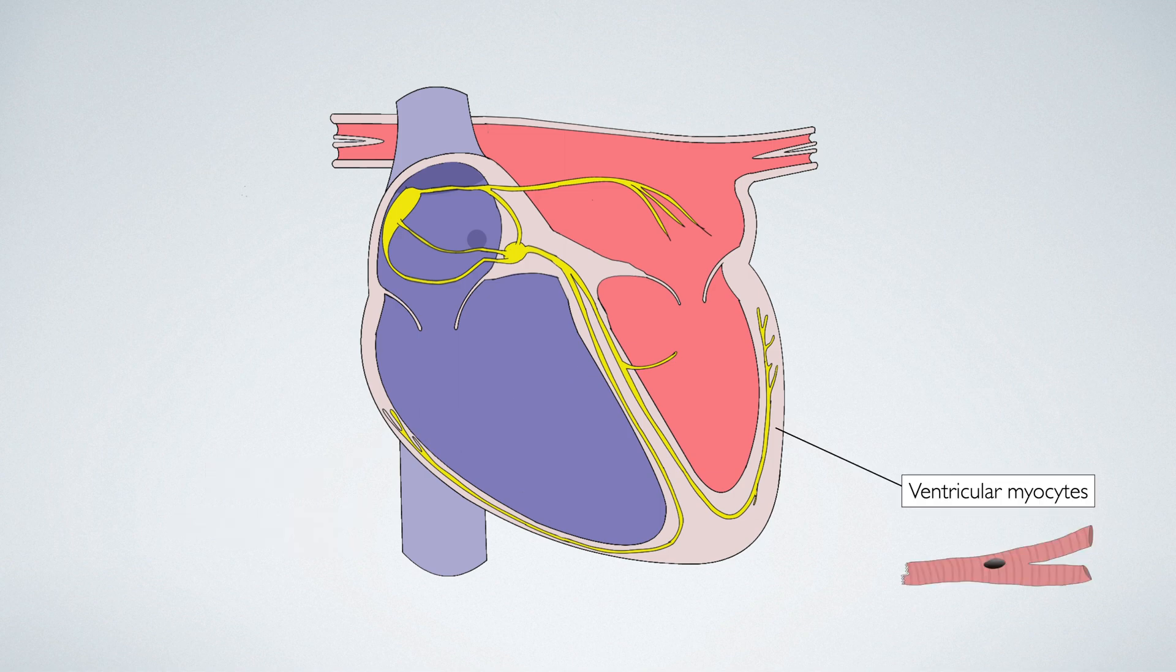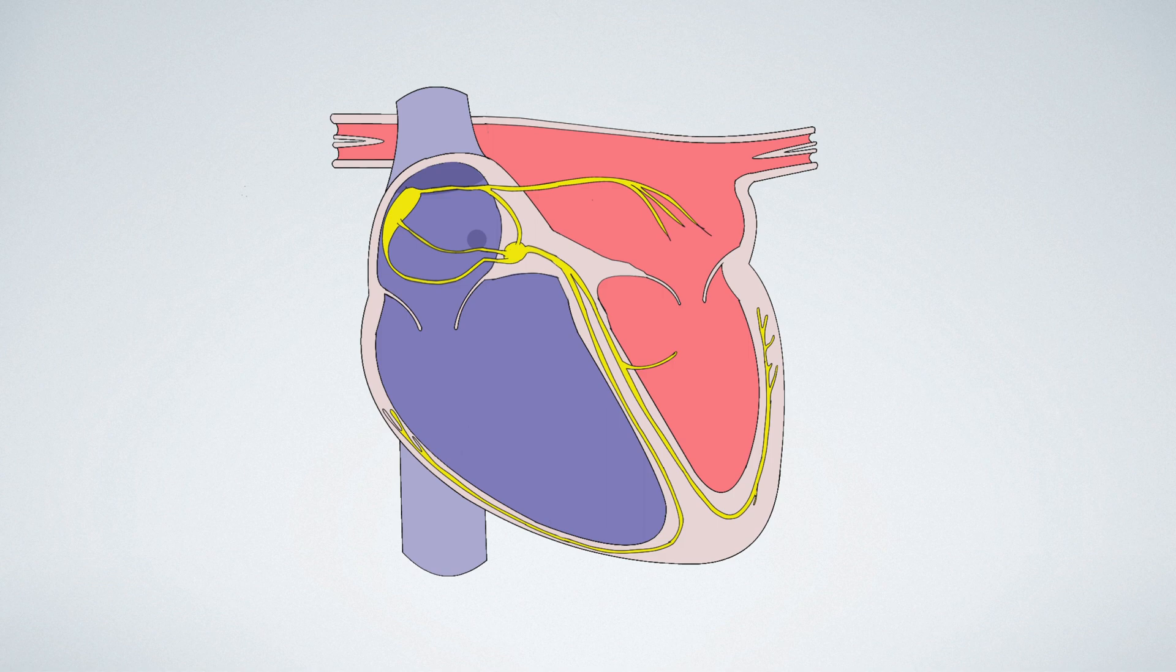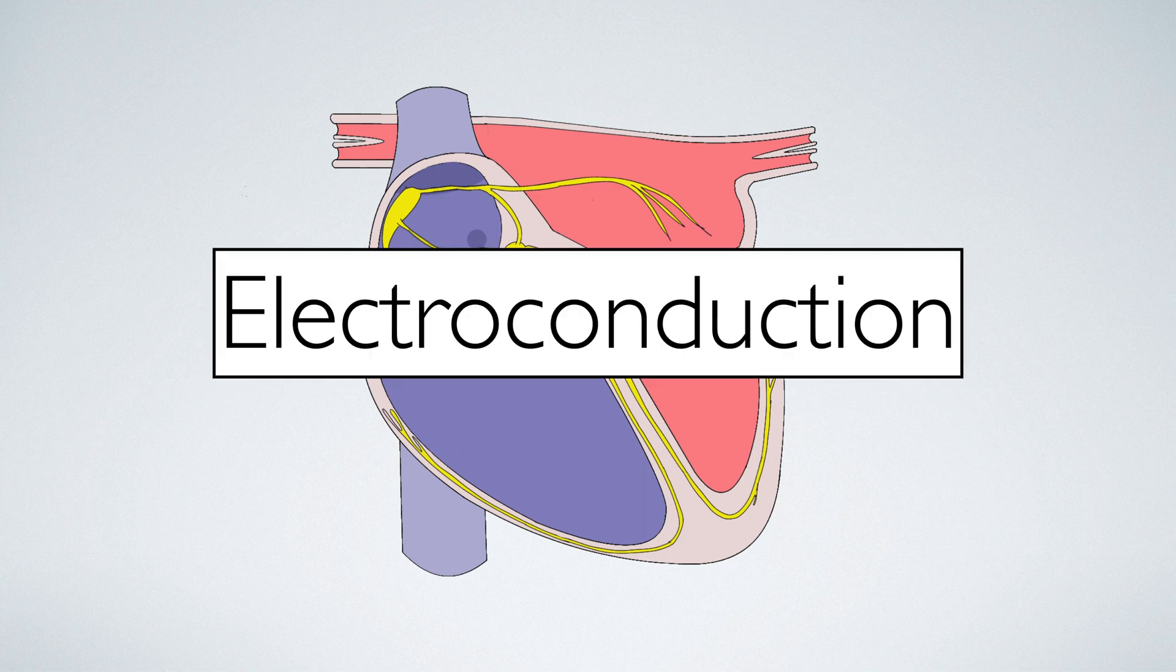Finally, ventricular myocytes are striated contractile cells which conduct electrical impulses and contract to bring about coordinated ventricular contraction. Now that we have learnt the anatomy, let's turn our attention to the physiology of electroconduction, which will explain how electrical impulses are generated and travel through the heart.